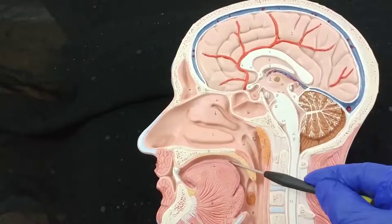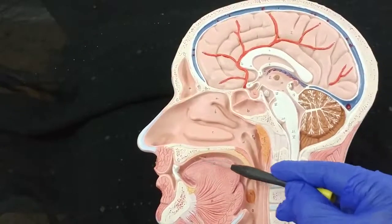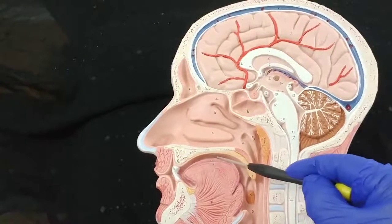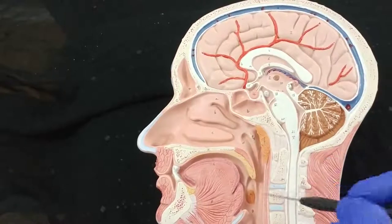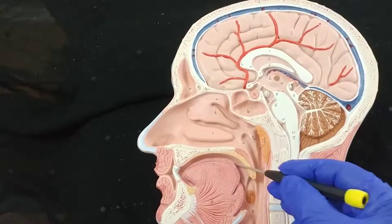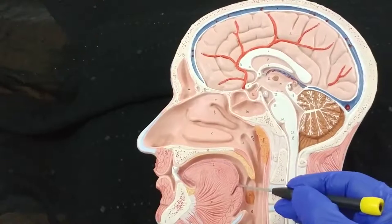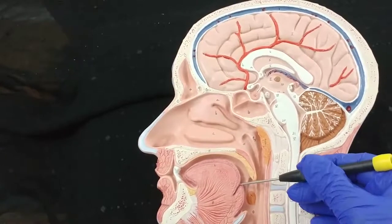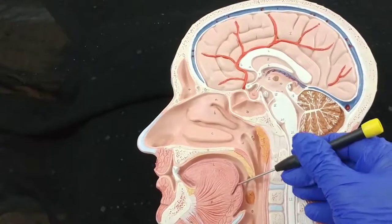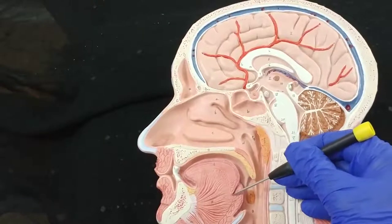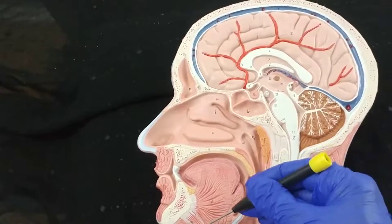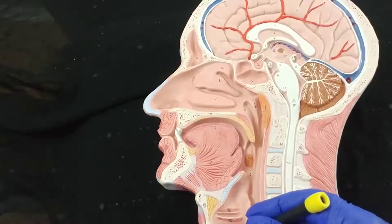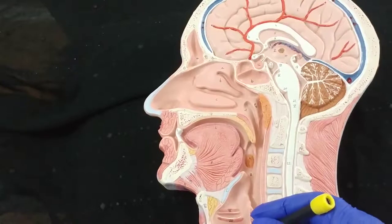The tongue is lined by stratified squamous epithelium. At the tip of the filiform papillae of the tongue, there is some keratinization. The tongue has an anterior two-third and posterior one-third. We have the foramen cecum here, which is the site where the thyroid gland begins. The thyroid gland goes through the tongue, in front of the hyoid bone, and ultimately in front of the thyroid and the tracheal cartilages.